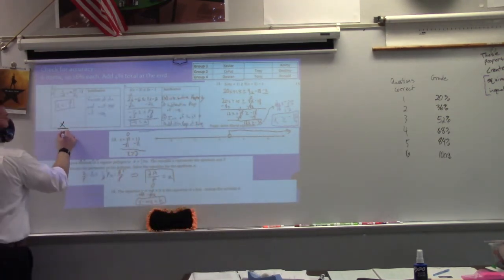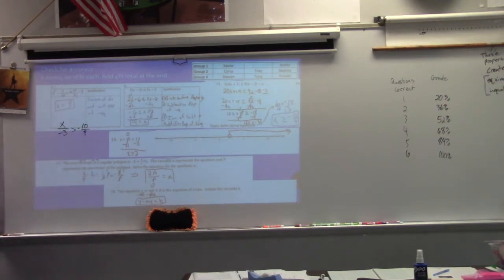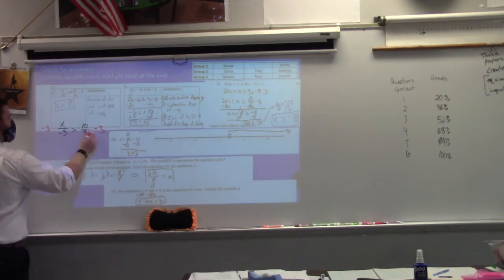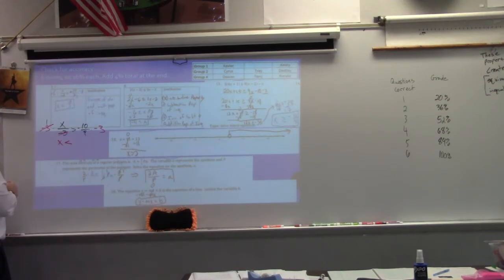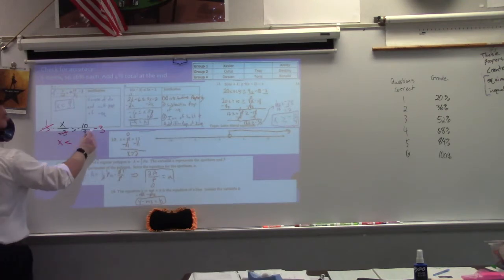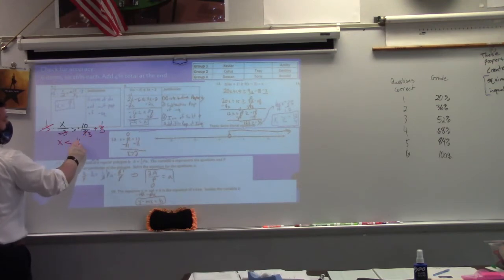If I have x divided by negative 3 is greater than negative 10 ninths, multiply by negative 3. You have x that's greater than... Why did I put less than? Oh, you multiply by negative — multiply both sides and then flip the inequality. The two negatives become a positive, and I simplified: 3 and 9 have a 3 in common, so 3 divided by 3 is 1, 9 divided by 3 is 3. So it's a positive 10 thirds.